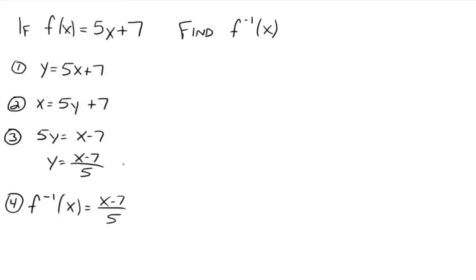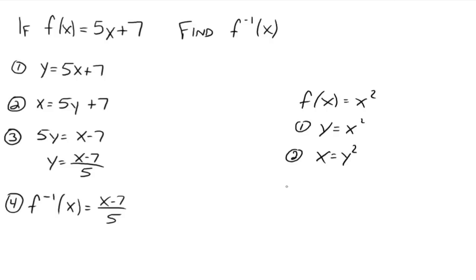In step three, suppose f was equal to x squared. Step one: y equals x squared. Step two: x equals y squared. Step three, isolate y — well, y is not a function of x, because if you put one number in for x you get two numbers back for y. That's not a function. Therefore, f of x equals x squared does not have an inverse function. Graphically, we know this because it's a parabola and does not pass the horizontal line test, so it can't have an inverse.